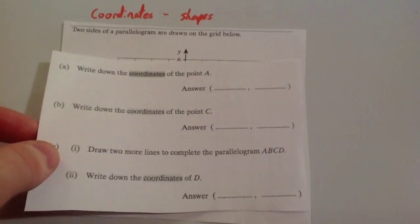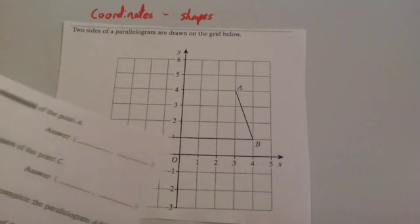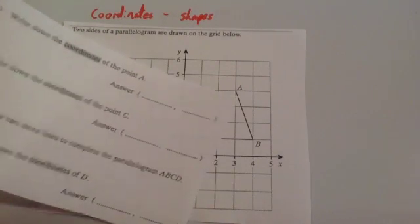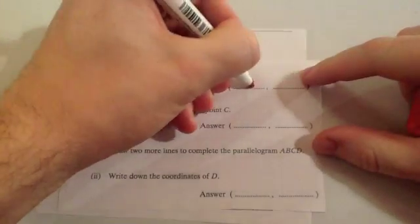So the first part of the question is write down the coordinate of A. So A is here. Remember it's three along the corridor and four up the stairs, or three across the x-axis, four up the y-axis, so it would be three, four.